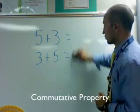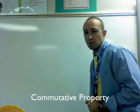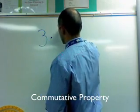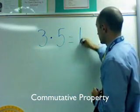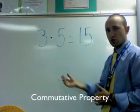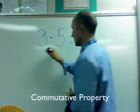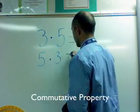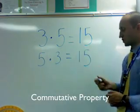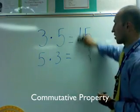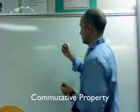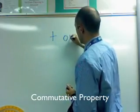Addition is commutative, but multiplication can be as well. If we have three times five, that's fifteen. The commutative property of multiplication works similarly — we switch the numbers to five times three, which is also fifteen. The numbers changed places but we still have the same answer. So with the commutative property, it can be addition or multiplication.